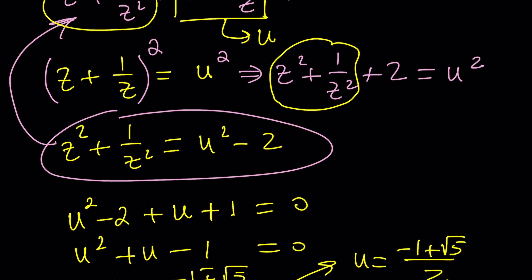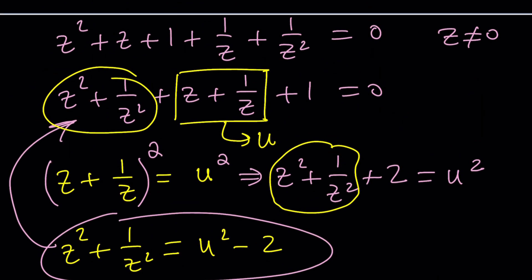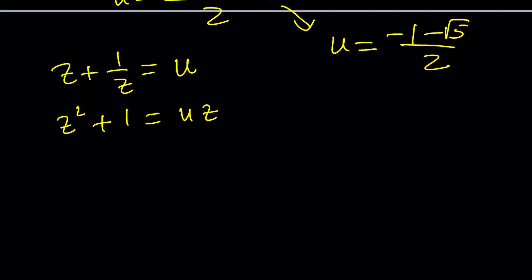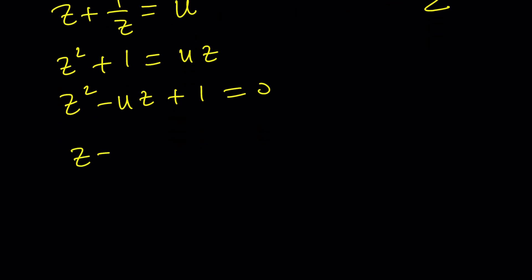So now we get two solutions for u: negative one plus root five over two, and these are for u. But we're not looking for u, we're looking for z, and the relationship between u and z is z plus one over z equals u. You can solve this equation for z as a quadratic, and then substitute u at the end. Multiply everything by z and we get z squared minus u z plus one equals zero.